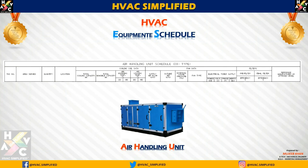DX Type Air Handling Unit के Equipment Schedule के Major Technical Requirements होते हैं: Tag Number, Area Served, Quantity, Location, Total Cooling Capacity, Total Sensible Capacity, Air Entering Temperature, Air Leaving Temperature जो कि Dry Bulb and Wet Bulb में consider किया जाता है, Supply Air Flow, Outdoor Air, External Static Pressure, और Fan Type।